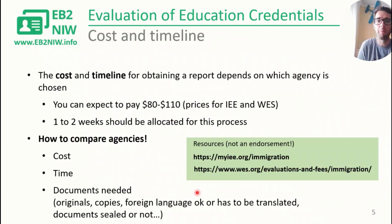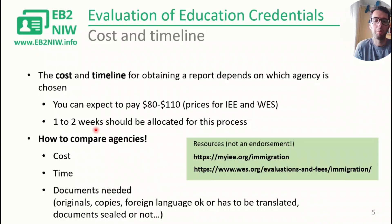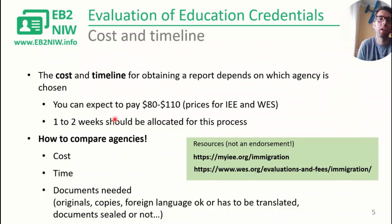Cost and timeline are always important. The cost and timeline really depend on which agency you choose, but typically you can expect to pay between $80 and $110 — those are the prices for the two popular agencies I talked about. They claim they can deliver the report in a few days, but I would allocate about two weeks for this process. If possible, don't leave it for the end of your I-140 preparation. You know you'll need this and you already have your degree, so get it started as soon as you can.